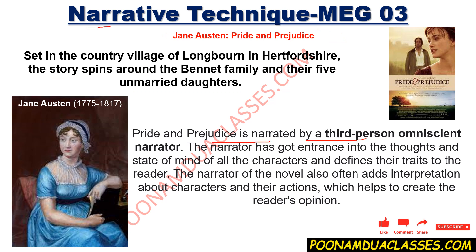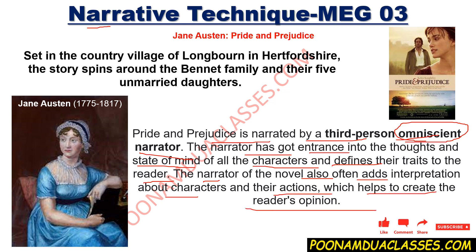Pride and Prejudice is narrated by a third-person omniscient narrator — a narrator who is present everywhere. The narrator has access into the thoughts and state of mind of all the characters, can enter each character's mind, and defines their traits to the readers, including their personality, what they are thinking, and hints about their next actions. The narrator also often adds interpretation about characters and their actions, which helps to create the reader's opinion.